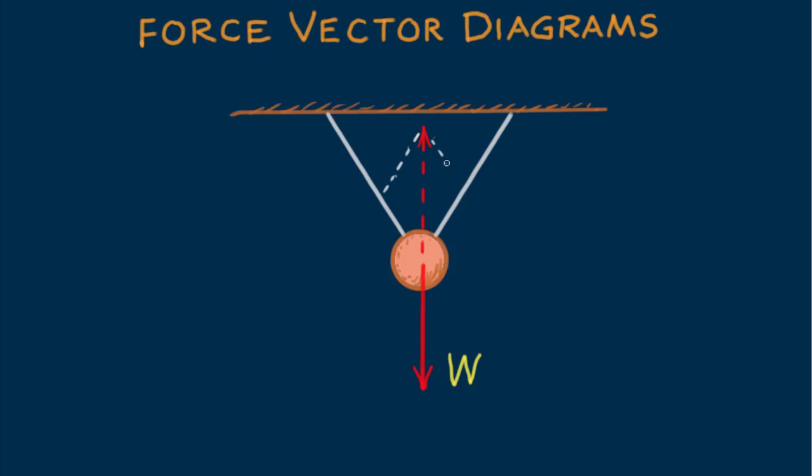Using the parallelogram rule, being careful to keep the sides of the constructed parallelogram parallel to the strings, we see that the two tensions are somewhat greater than half the W vector.